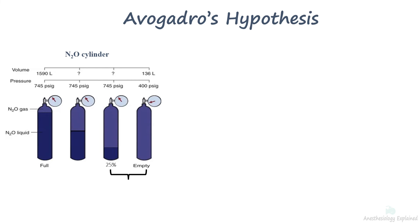The pressure will remain constant until 75% of the 1590 liters of gas is consumed, which is approximately equal to 400 liters. Prior to this point, the cylinder must be weighed to determine the amount of gas.